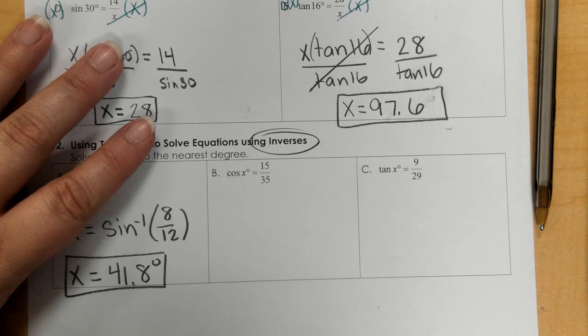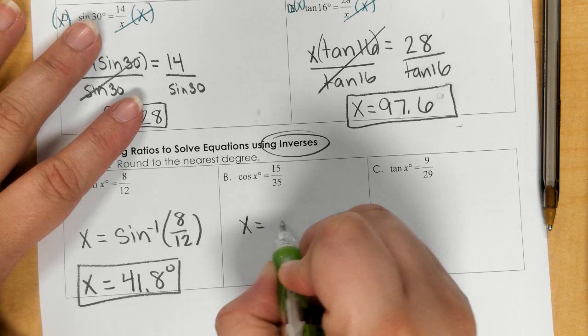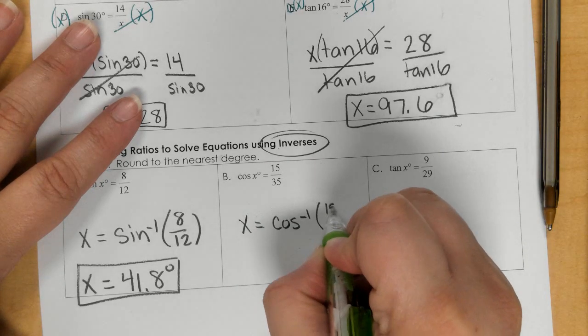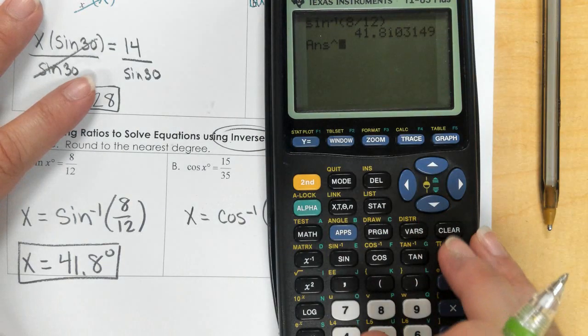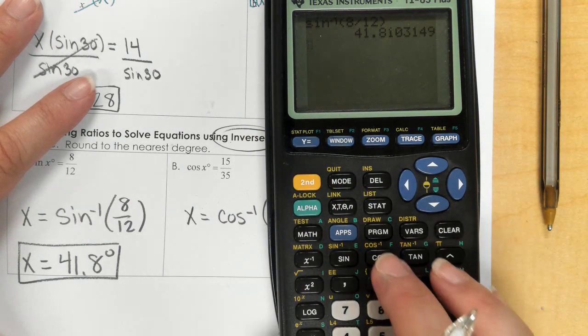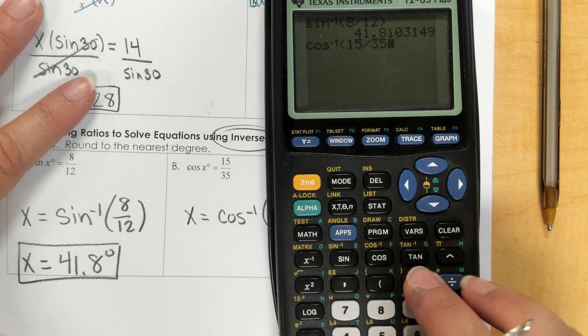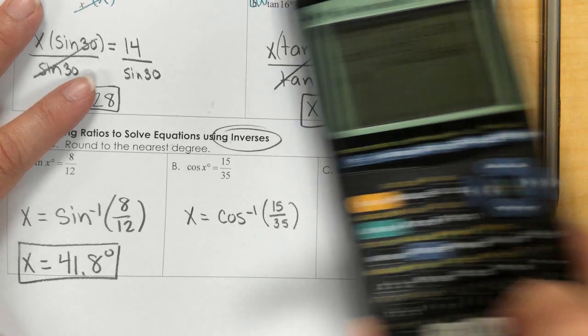Okay, so part B, we're going to do x equals the inverse of cosine, and then 15 divided by 35. So, second cosine of 15 divided by 35, close the parenthesis, and it's 64.6 degrees.